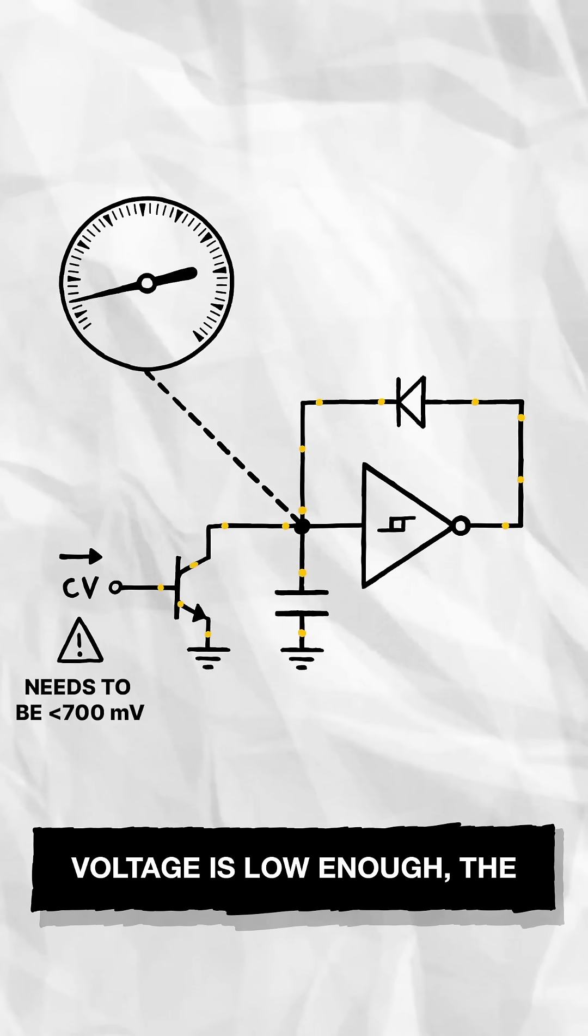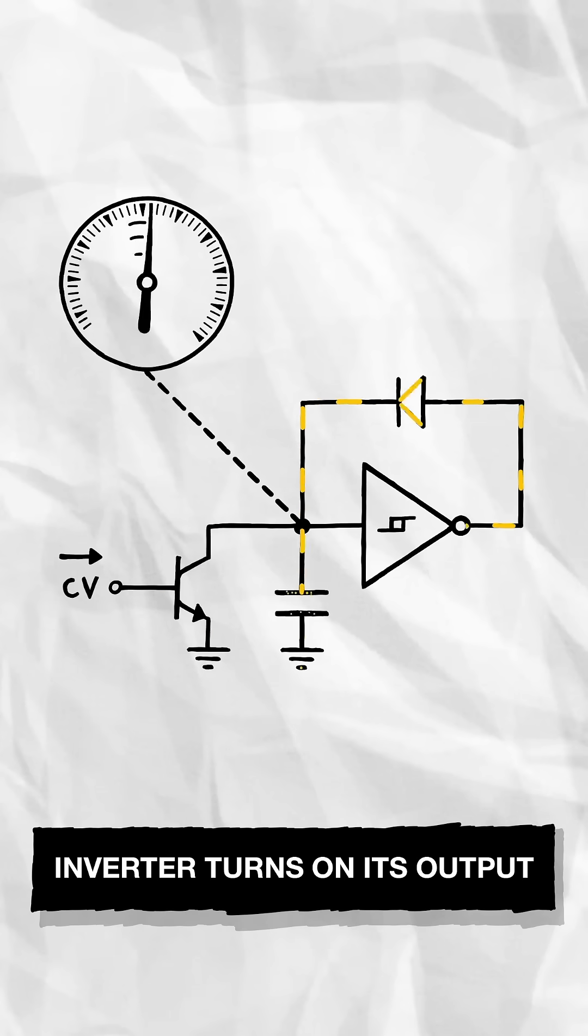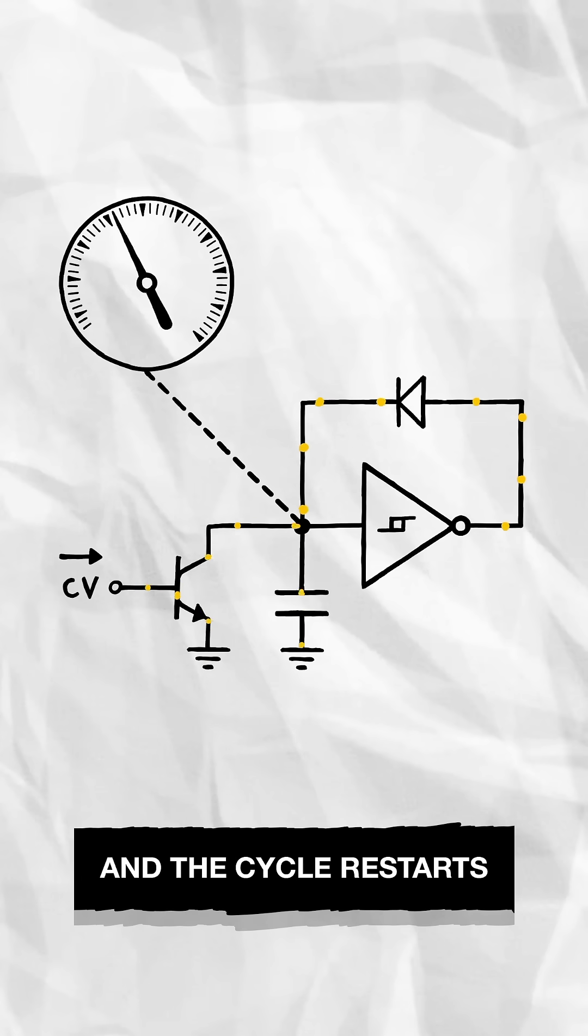Finally, when the capacitor voltage is low enough, the inverter turns on its output, and the cycle restarts.